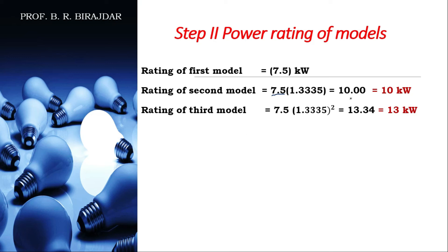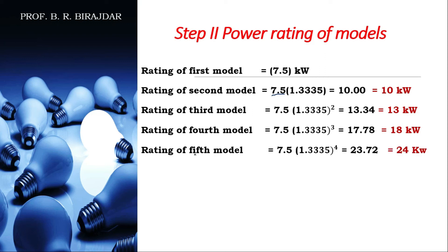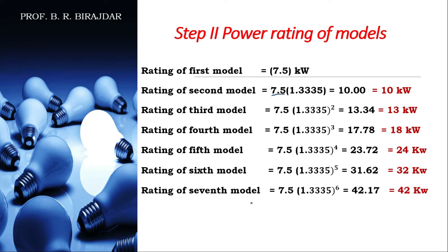The third model is 7.5 × 1.3335² = 13.34, rounded to 13 kilowatt. The fourth model is 7.5 × 1.3335³ = 17.78, rounded to 18 kilowatt. The fifth model is 7.5 × 1.3335⁴ = 23.72, rounded to 24 kilowatt. The sixth model is 7.5 × 1.3335⁵ = 31.62, rounded to 32 kilowatt.